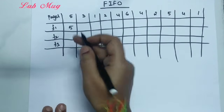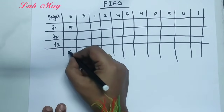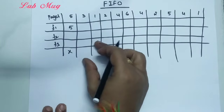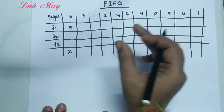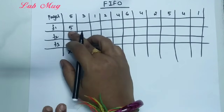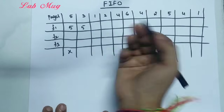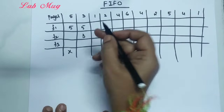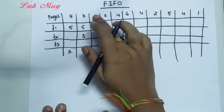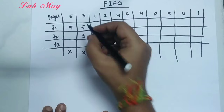Next is page 3. Page 3 is not in main memory, but there is still an empty place. Page 5 is already inserted in one frame, and page 3 is inserted into the next available frame — that is also a page fault. Next is page 1, which is also not in main memory, so that is also a page fault.